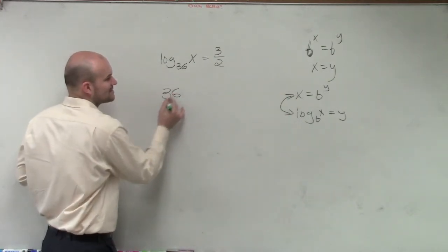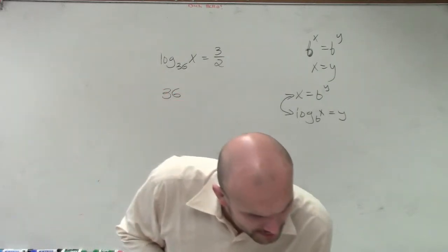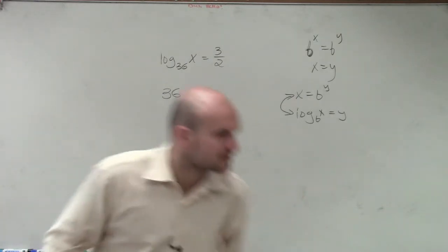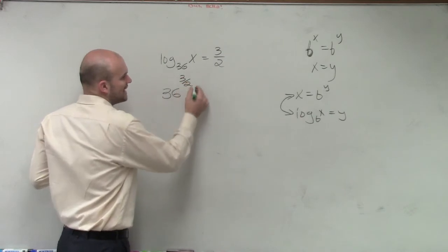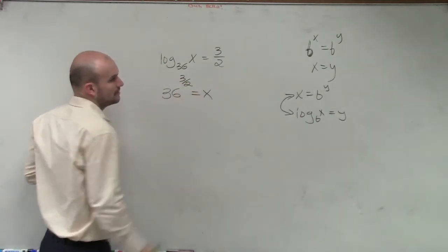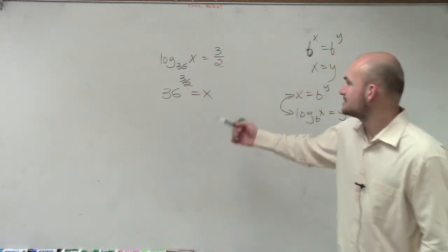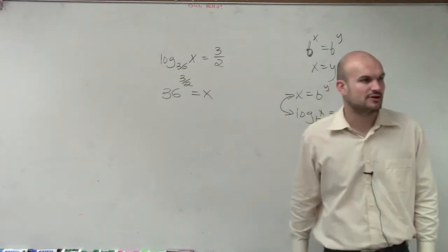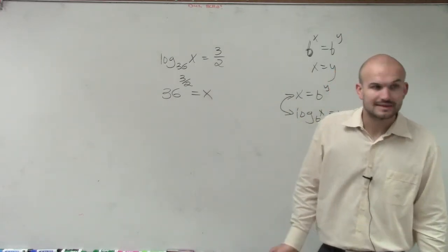Did I write the right problem? Let me think through. 36 raised to the 3 halves equals x. Now, since I rewrote it in that format, can I evaluate for 36 to the 3 halves power? Yeah, we can, right?